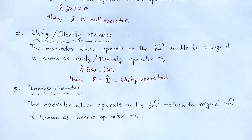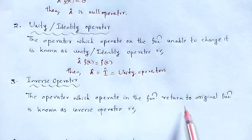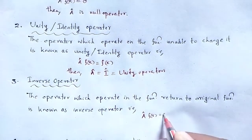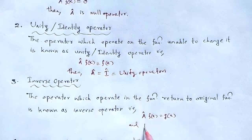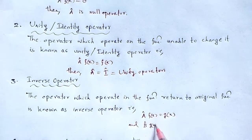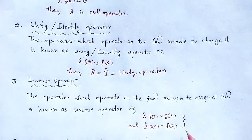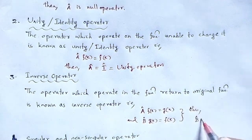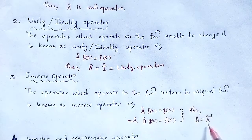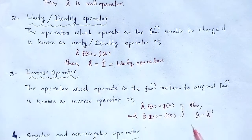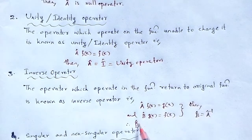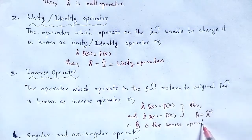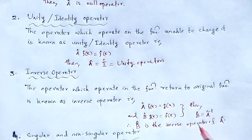Then there is the inverse operator. The operator which operates on a function and returns it to the original function is known as the inverse operator. When operator A-cap operates over a function and gives rise to g(x), and another operator B-cap operates on g(x) and gives rise to f(x), then B-cap is the inverse of A-cap — B-cap is called the inverse operator.